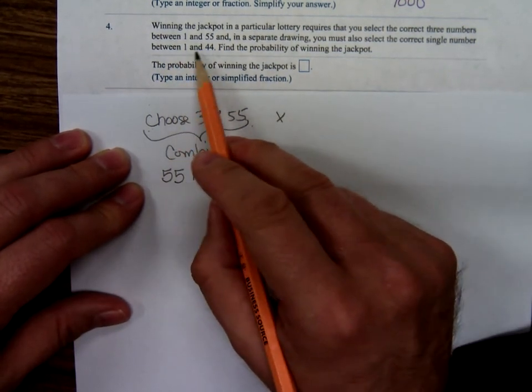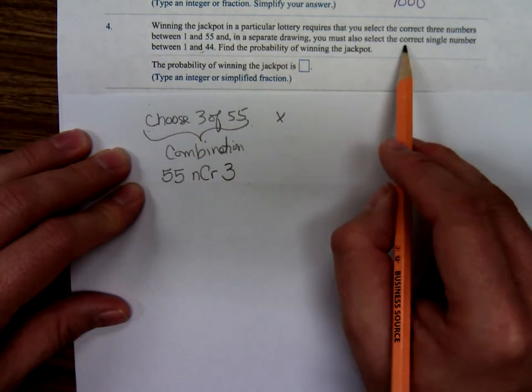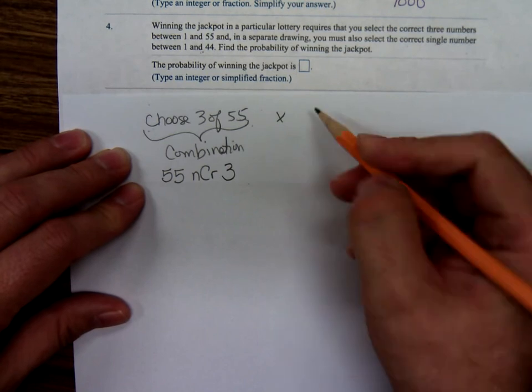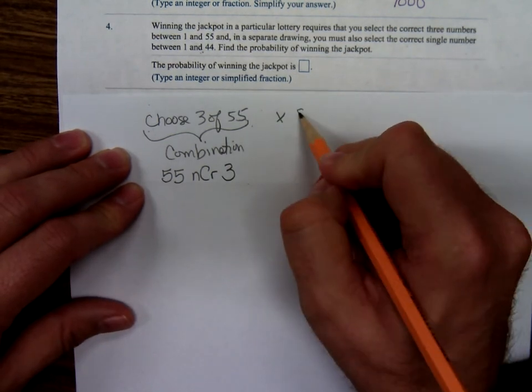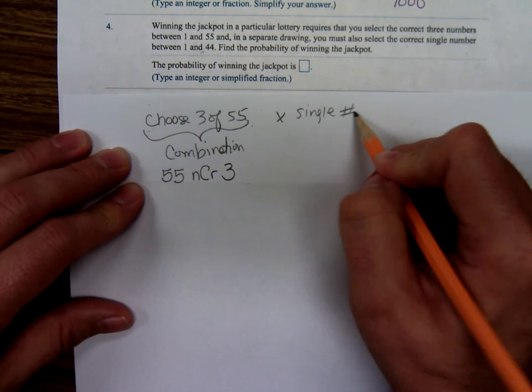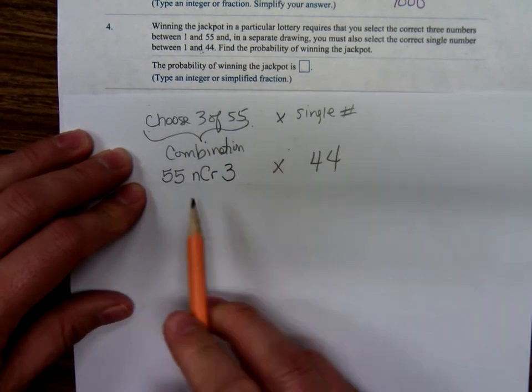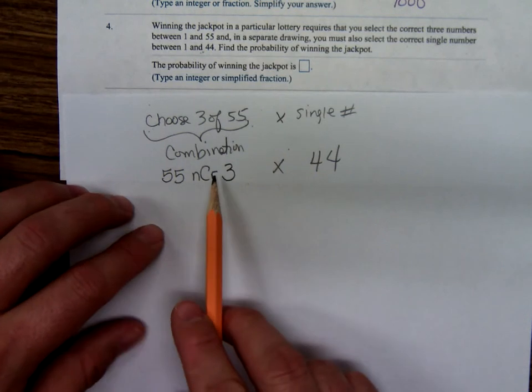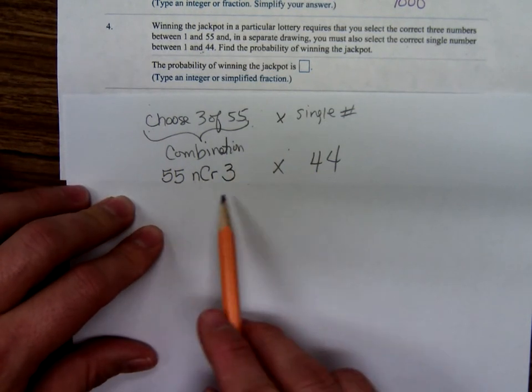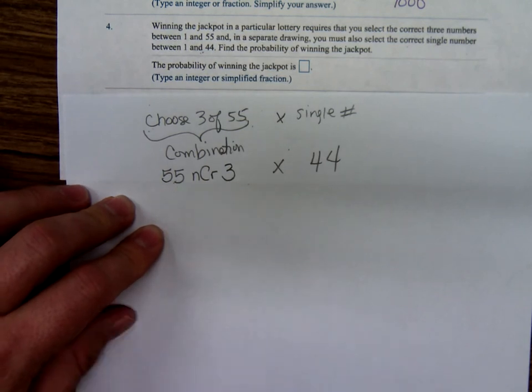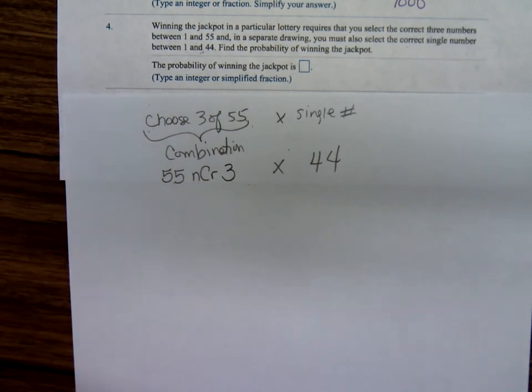Times, choose that last single number. You must select the correct single number between one and 44. Well, there's only 44 of those. So it's going to be 55 NCR 3. That'll give you the number of combinations of 55 items taken three at a time. Reaching into those 55 balls, how many different ways could you choose three of them? And then times 44.